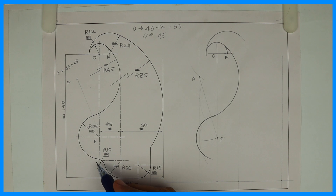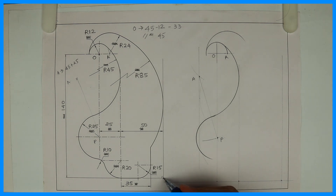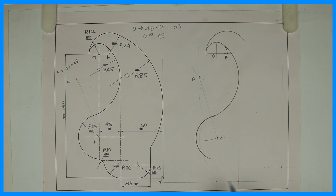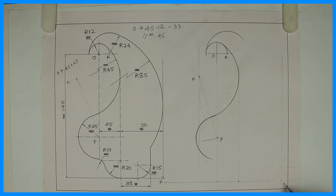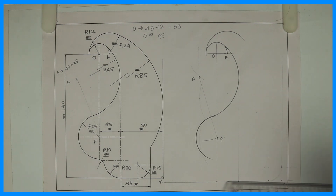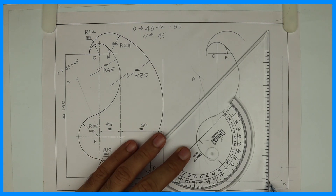Now we'll look at radius 10, which is external to radius 20. This point is also important — let's say this is X. This point X is important, so we'll mark X here. This is 35. So from the 25mm line I will take 35mm and draw a vertical line.